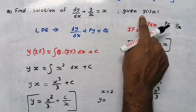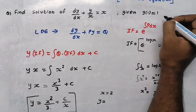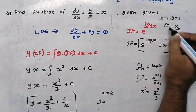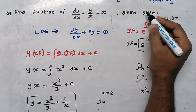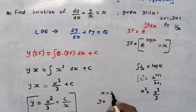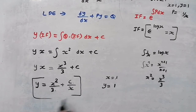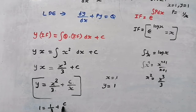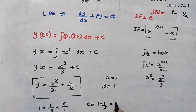The initial condition given is y(1) = 1, meaning at x = 1 the value of y is 1. Substituting: 1 = 1²/3 + C/1, which gives 1 = 1/3 + C. So C = 1 − 1/3 = 2/3.